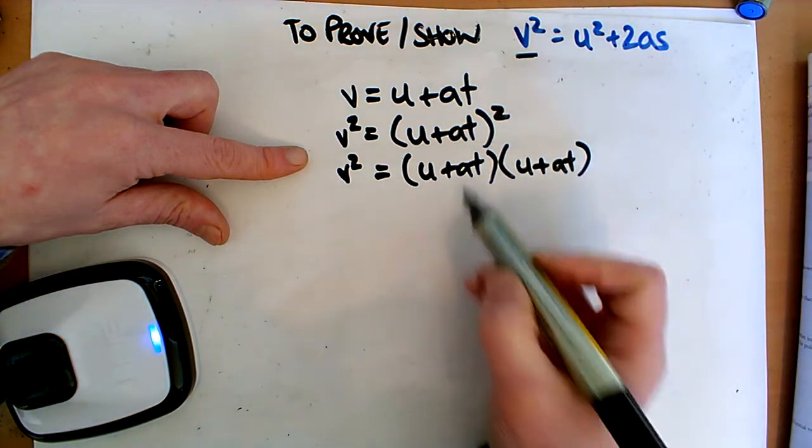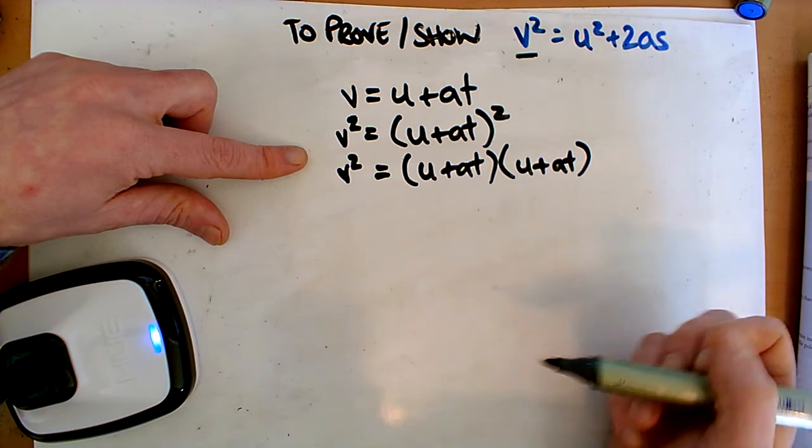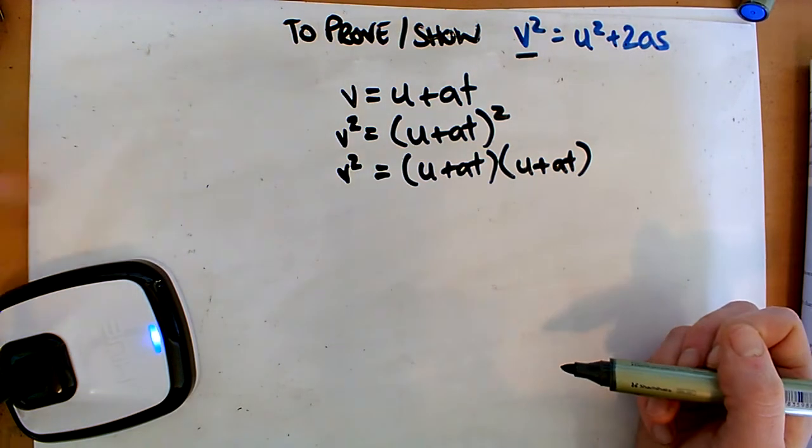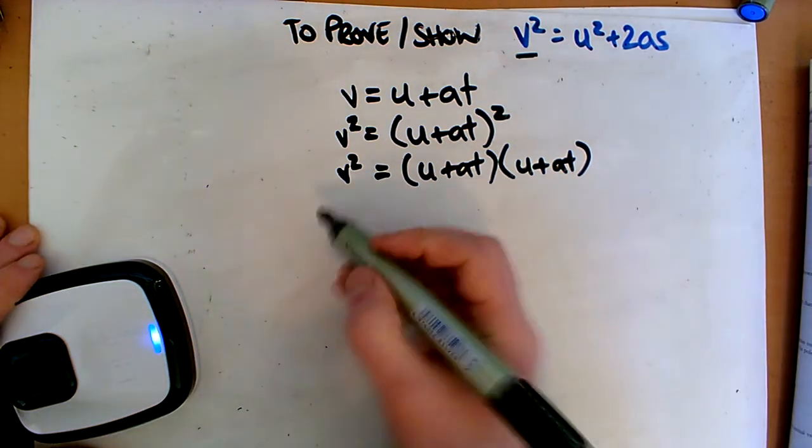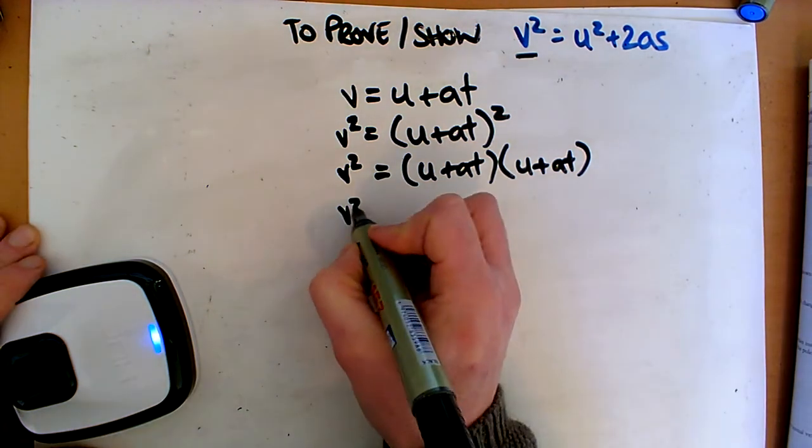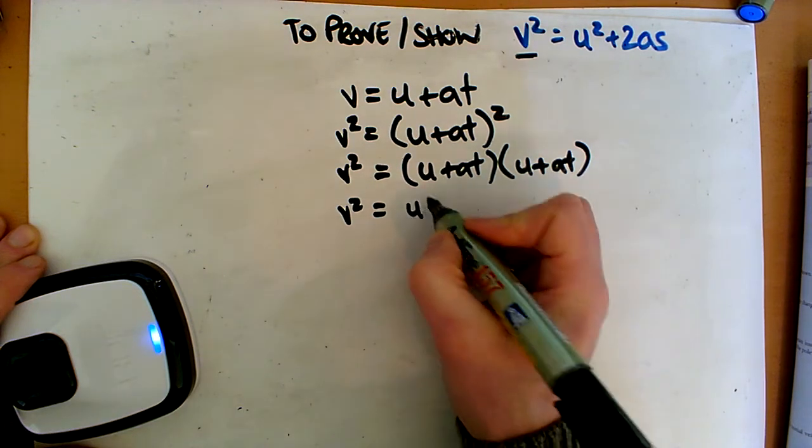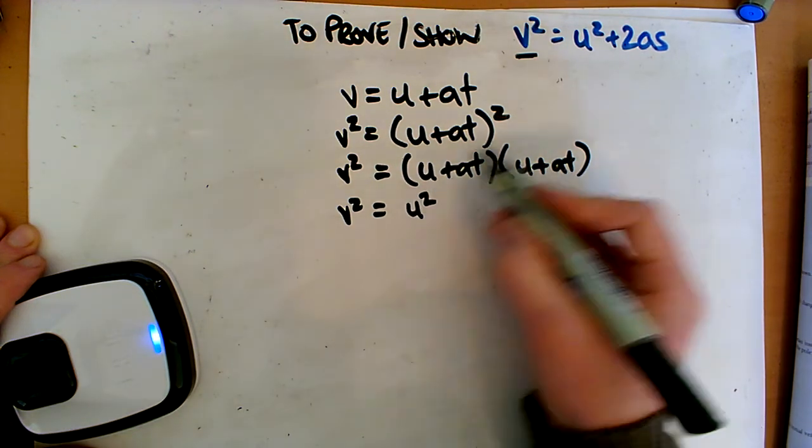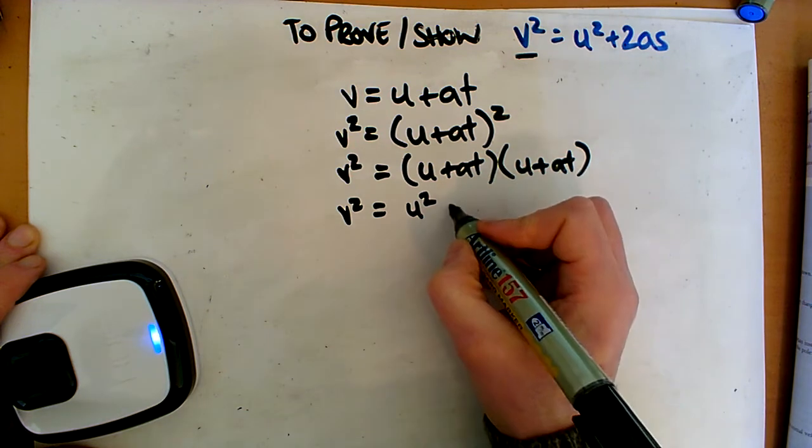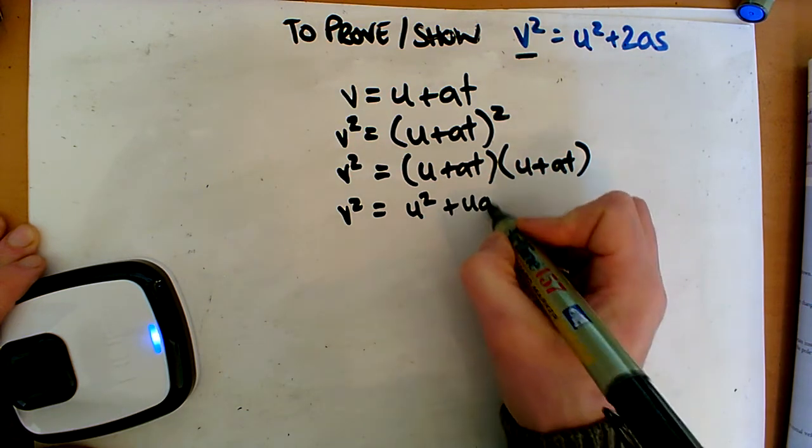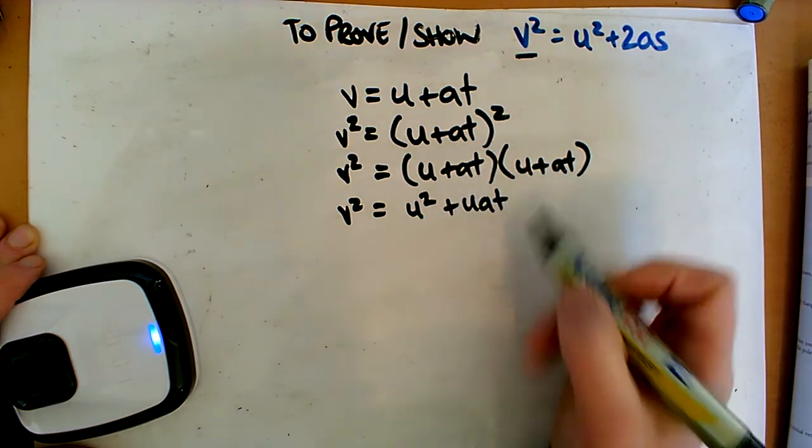Okay, so that's just what squared is, you're multiplying it by itself. Now we have two brackets, so we have to multiply everything in the two brackets by themselves. So let's do it. So we've got our v² is equal to, now u multiplied by u, it's just u². u multiplied by at is just plus uat, okay, so that one's done.